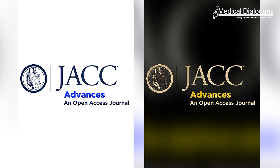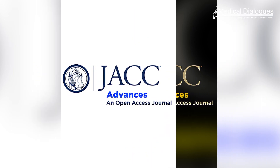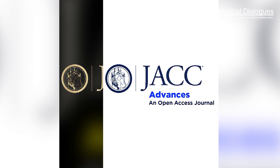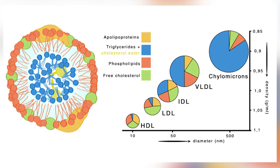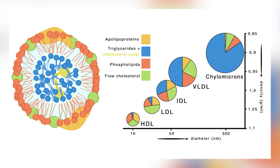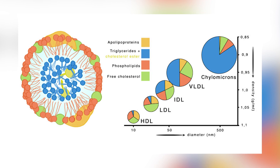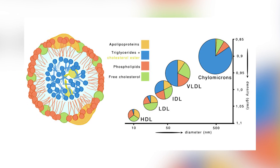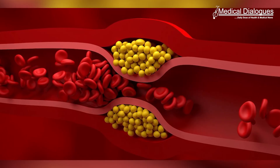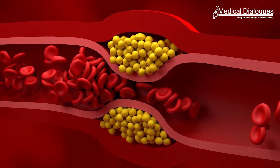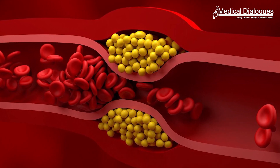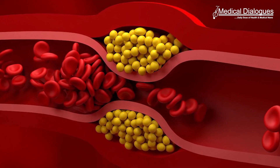In a recent study published in the journal JACC Advances, researchers examined the presence of coronary atherosclerosis using coronary computed tomography angiography in asymptomatic adults without traditional risk factors, based on their serum levels of low-density lipoprotein cholesterol, non-high-density lipoprotein cholesterol, and apolipoprotein B. They found that coronary atherosclerosis is common, and the prevalence increases with increasing levels of atherogenic lipoproteins, even in low-risk adults without traditional risk factors.